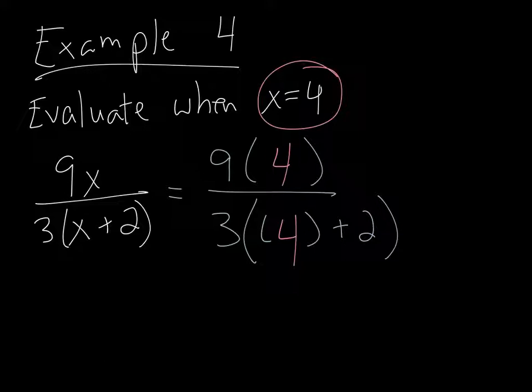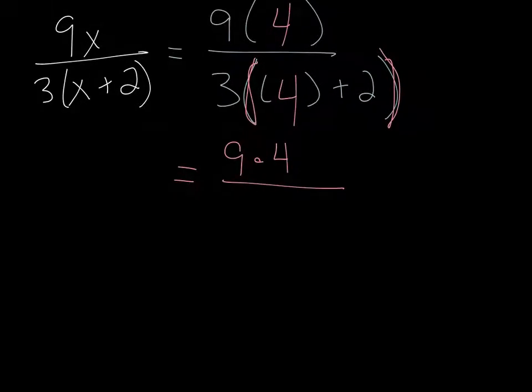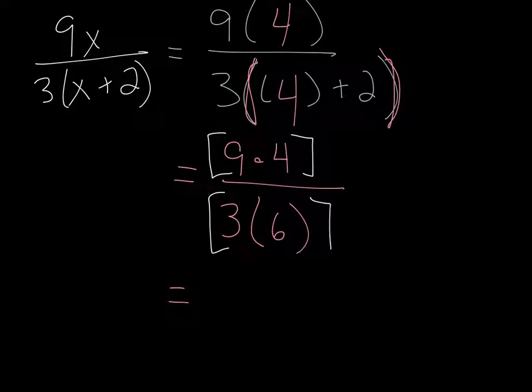So let's start with the big grouping symbols on the bottom here. We have 9 times 4 on the top. I'm just going to leave that alone. I'm going to rewrite it as 9 times 4 that way. On the bottom, inside the bigger grouping symbols, we have 4 plus 2, which is 6. Now, the fraction bar is actually a grouping symbol also. It's grouping the stuff on the top and the stuff on the bottom. What we really have here are sets of parentheses around the top and sets of parentheses around the bottom. We have to do those two things separately. 9 times 4 is 36. 3 times 6 is 18. And 36 divided by 18 is 2. And there is the answer you should have arrived at.